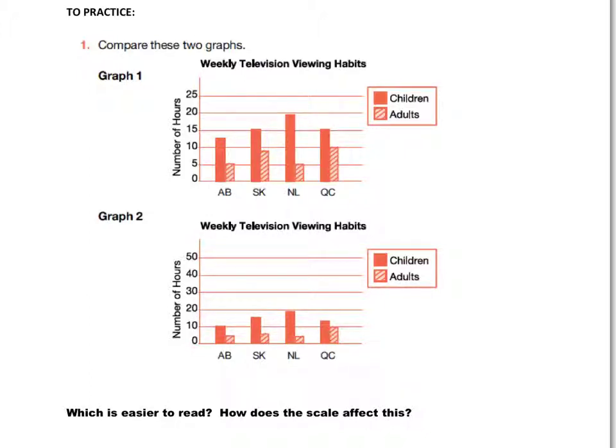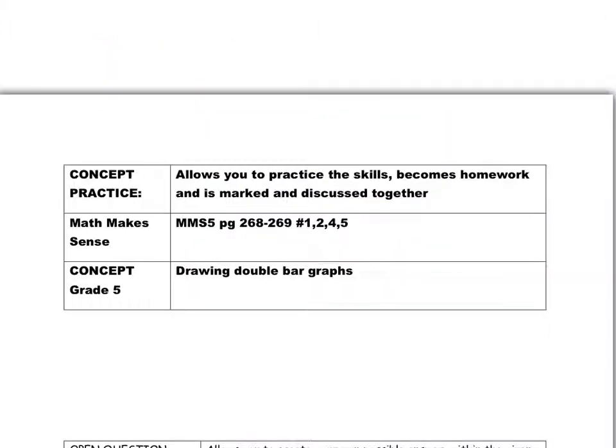So if possible, counting by 1s, 2s, 5s are better choices than counting by 10s, 50s, and so on. Really look at the numbers that you're working with. All right. You're moving on to your concept practice. Page 268, 269, numbers 1, 2, 4, and 5. Drawing double bar graphs. As you're drawing, make sure if you have any questions, please remember to ask.